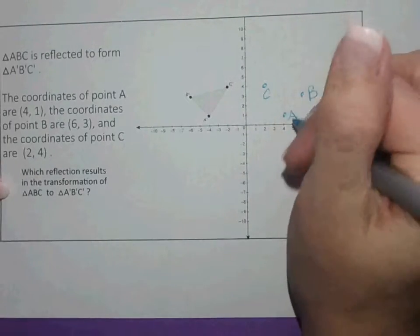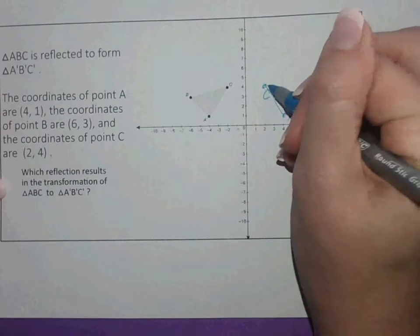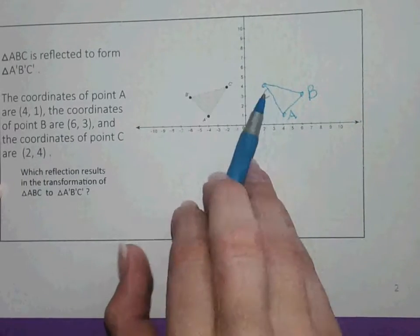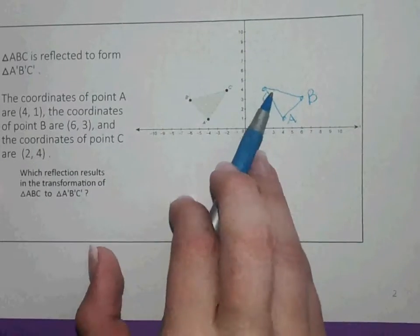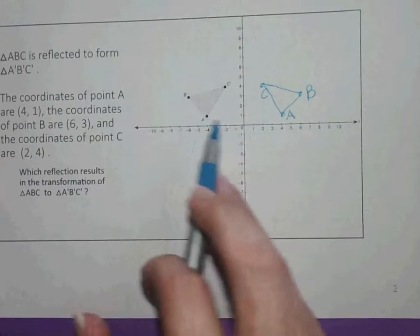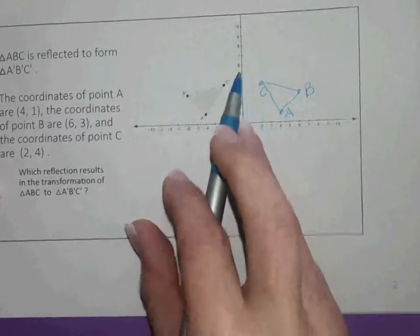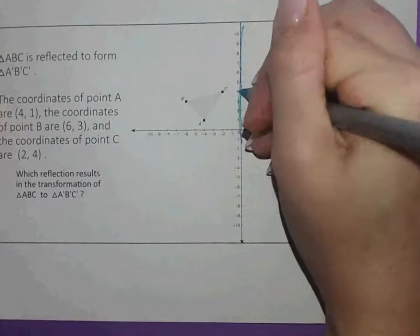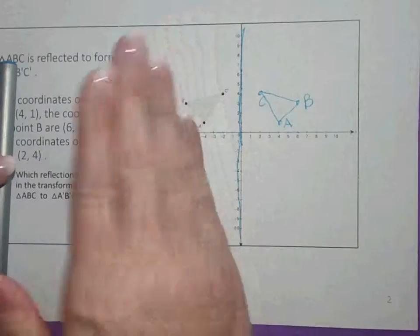So what reflection results in the transformation of ABC to A-prime, B-prime, C-prime? So if you notice here, it's negative 2 and positive 2. So it is across one of the axes, but I would say that it flips over this axis. Notice it just flips over.